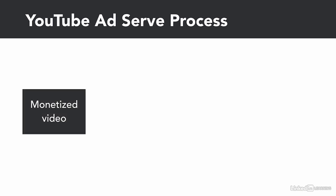Now, how does YouTube determine which ad gets displayed in front of each video? You have a video uploaded to YouTube, and once a user goes to watch that video, bids from different advertisers will come in based on how much they're willing to pay.